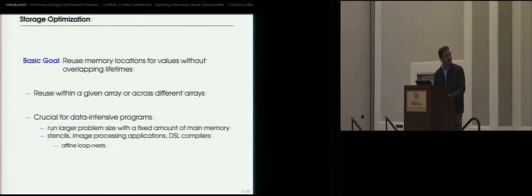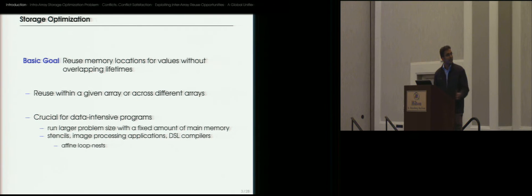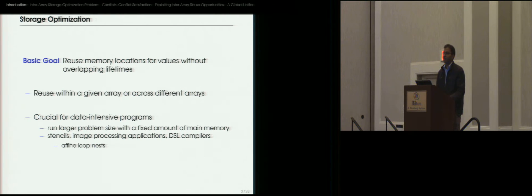Some example applications where this would be beneficial are stencil computations and image processing pipelines, especially when these are specified using a high-level domain-specific language. The class of programs that we are interested in in this work are called affine loop nests. These are basically loop nests where the loop bounds and array accesses are affine functions of the surrounding loop iterators and program parameters.